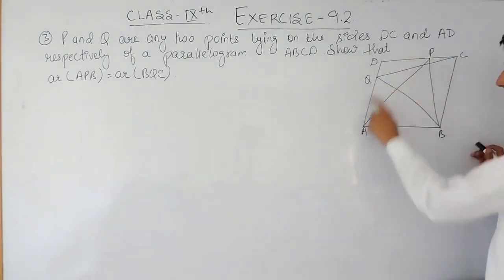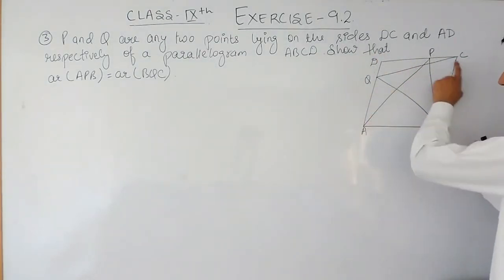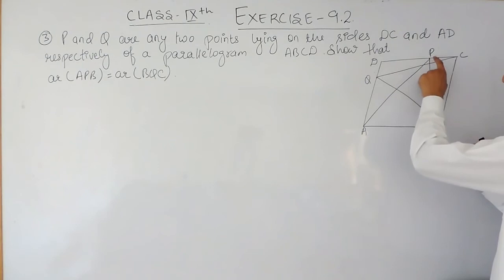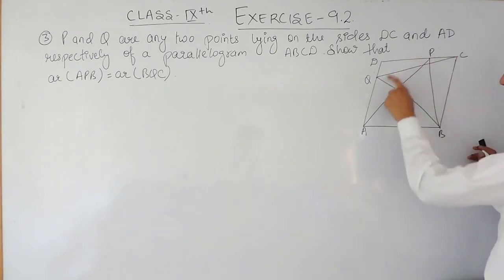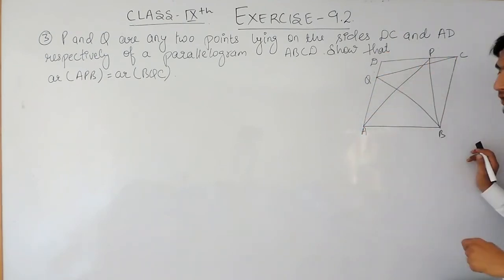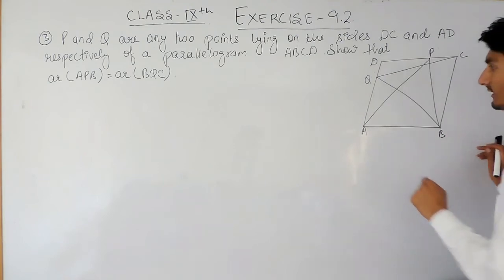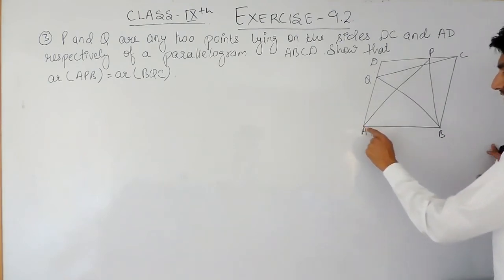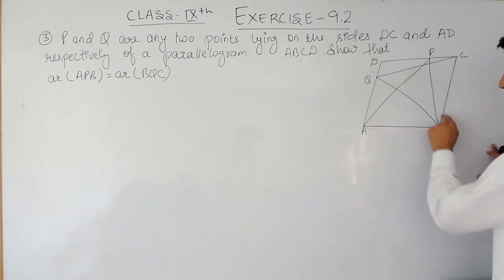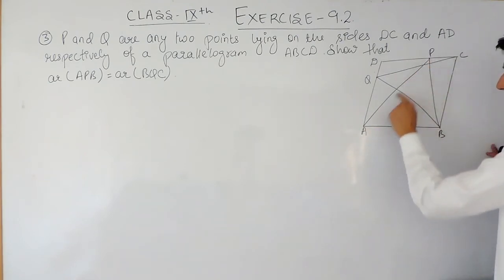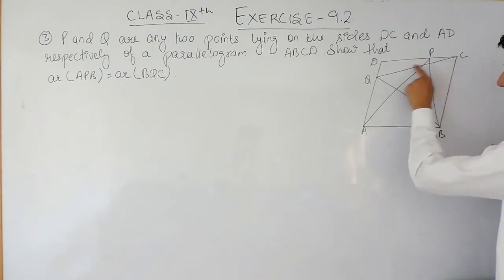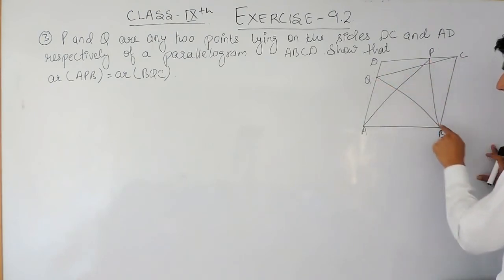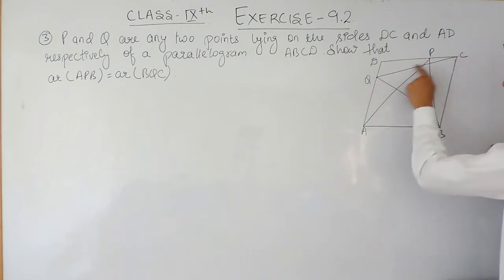Now, ABCD is a parallelogram given to you. P is any point on DC and Q is any point on AD. You have to prove that the area of triangle ABP is equal to the area of triangle BQC.